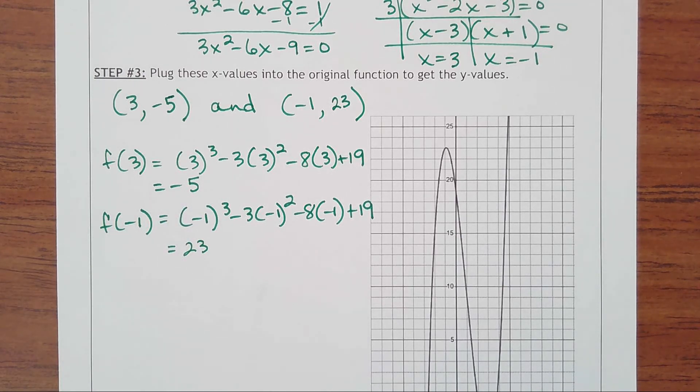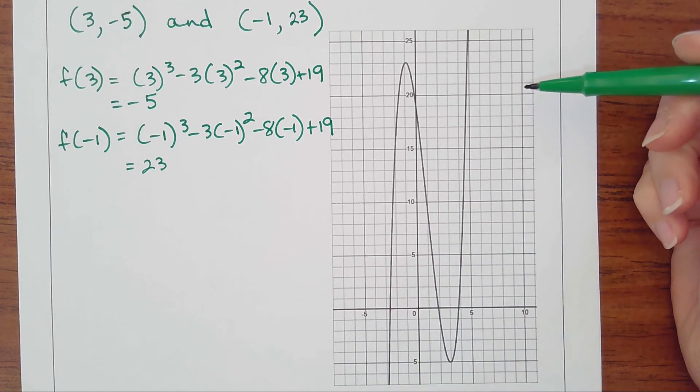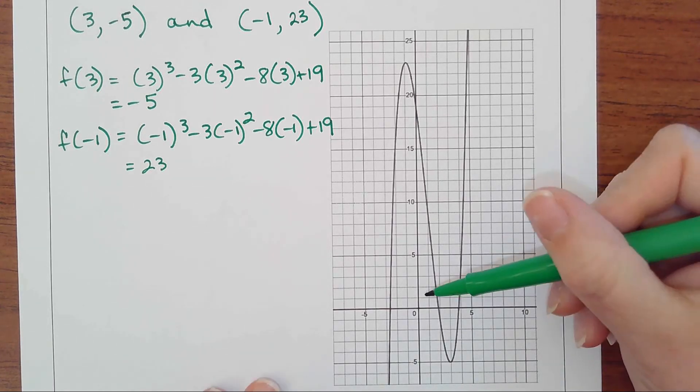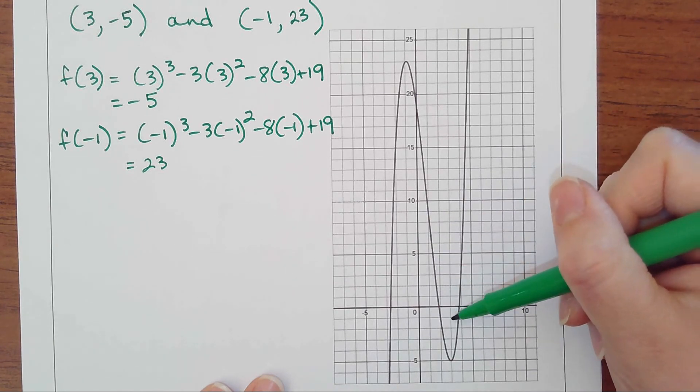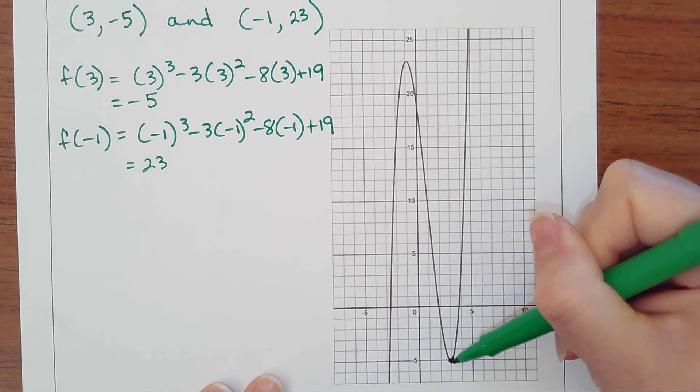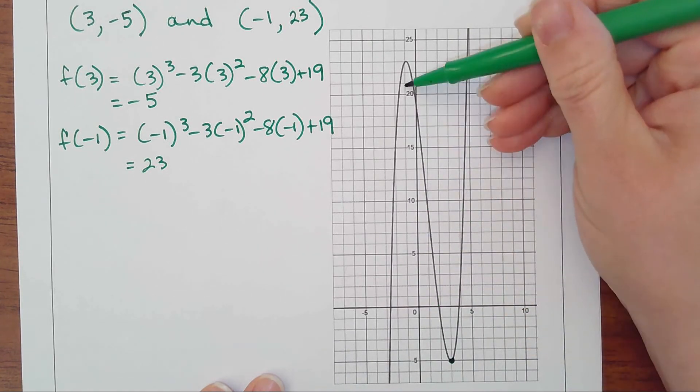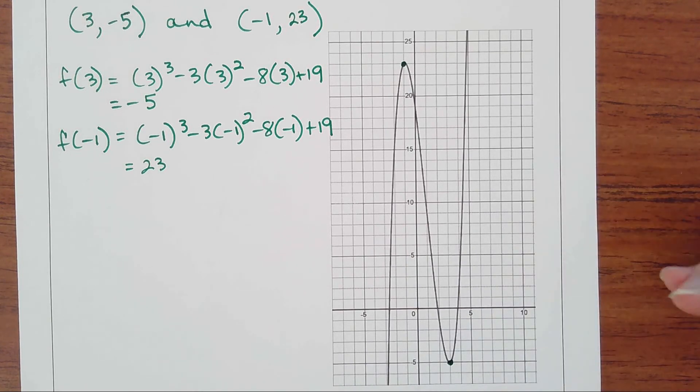Let's look at this graph. This is something I put here to solidify what you're doing, but this won't be on Delta Math. Let's plot the point (3, -5), which would be here, and (-1, 23), which would be here.